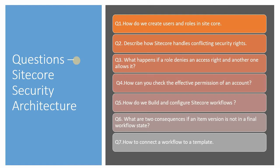The second question is: describe how Sitecore handles conflicting security rights. You should be aware of how Sitecore handles that. The third question is: what happens if one role denies access rights and another role allows it? What will happen in this case — which will get the preference?